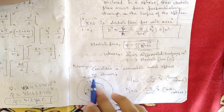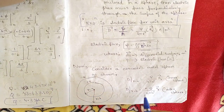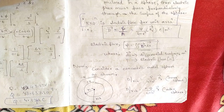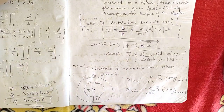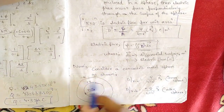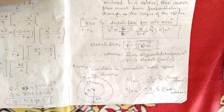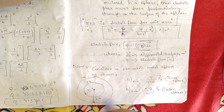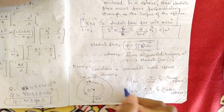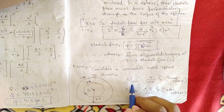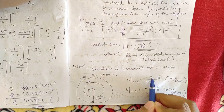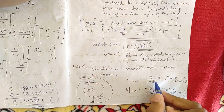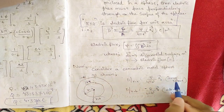Now consider a concentric metal sphere as shown here. Concentric circles share the same center but have different radii. Here we draw two spheres — one with radius a and charge plus Q, and another with radius b and charge minus Q. The flux density at radius a is Q divided by 4 pi a squared times a_r for the inner sphere.